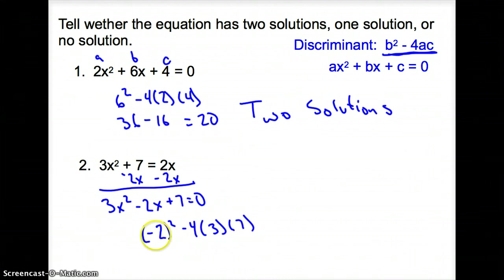This simplifies. Remember, (-2)² is (-2) times (-2), which is a positive 4, minus—and then this all multiplies to 84—which gives us negative 80. A negative number has no solution.